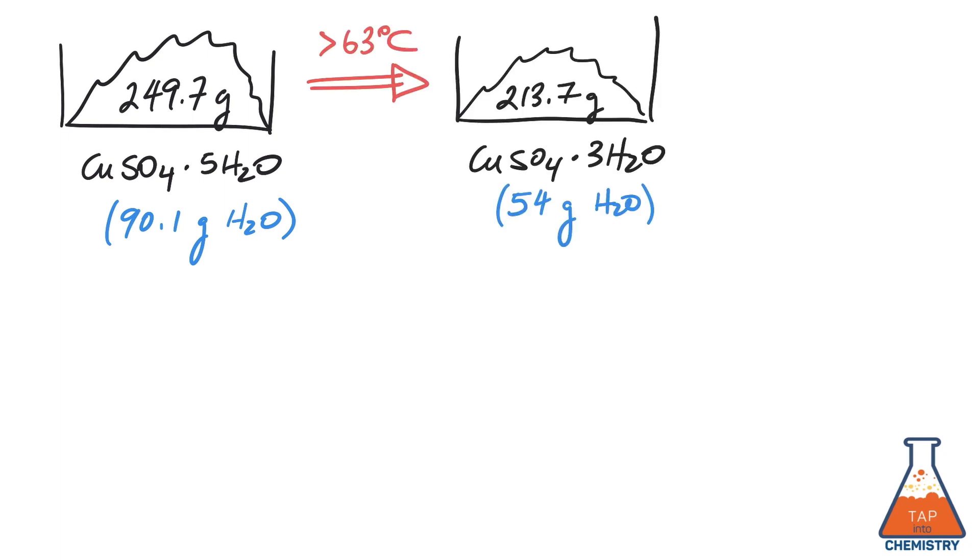Continuing to dry at 63 Celsius and a little bit above until the mass no longer changes, you will eventually get a pure sample of copper sulfate trihydrate. This will only have 54 grams of water in total for every mole of copper sulfate, and the mass will stabilize at 213 grams.